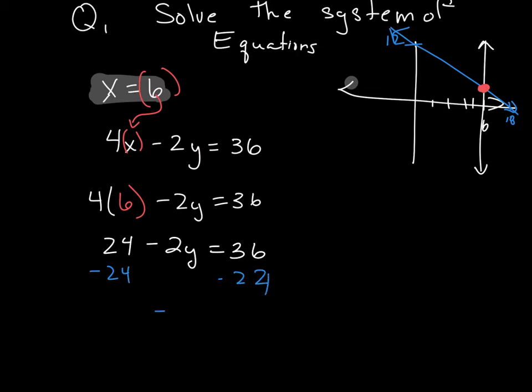And I'm left with negative 2y is equal to positive 12. Divide both sides by negative 2, and I get y is equal to 12.